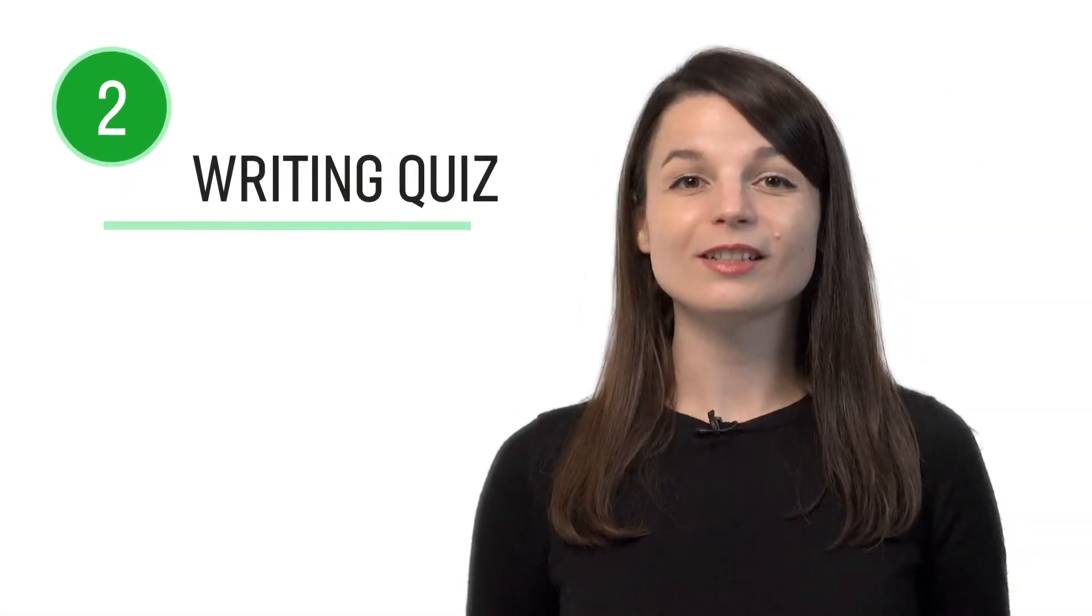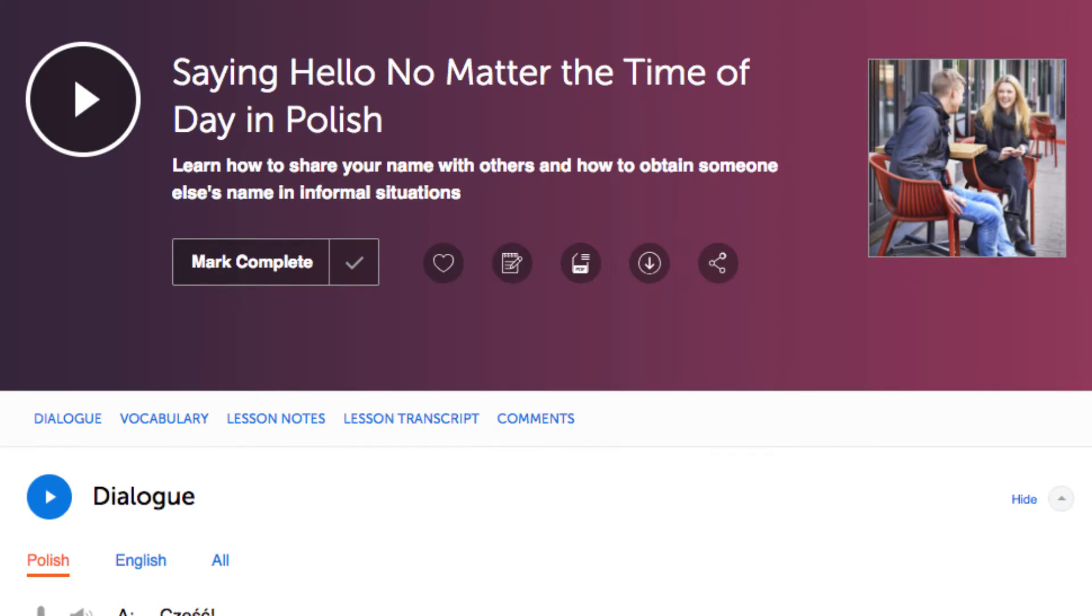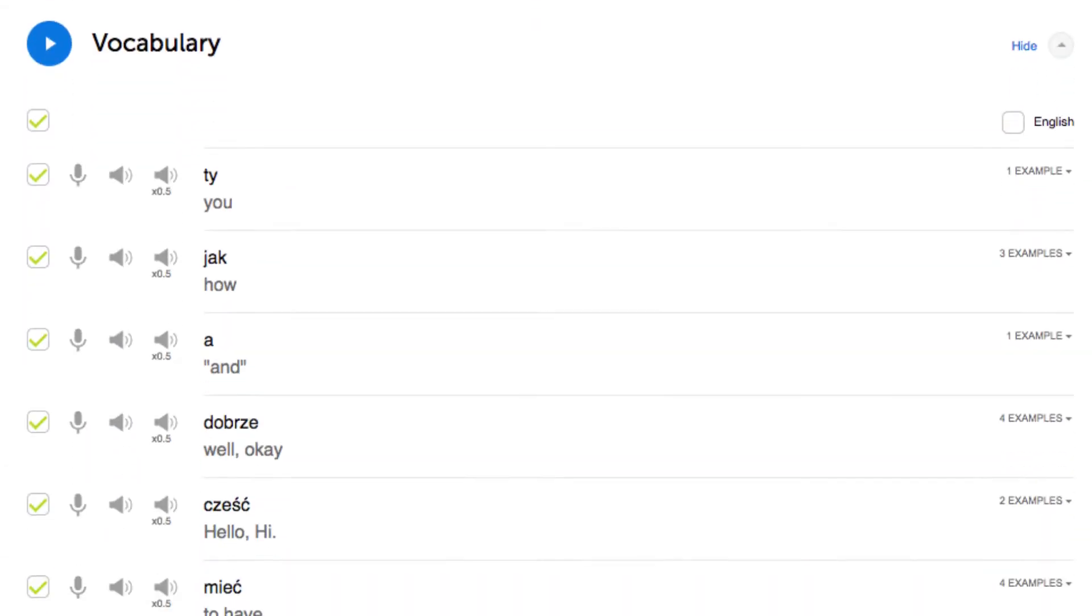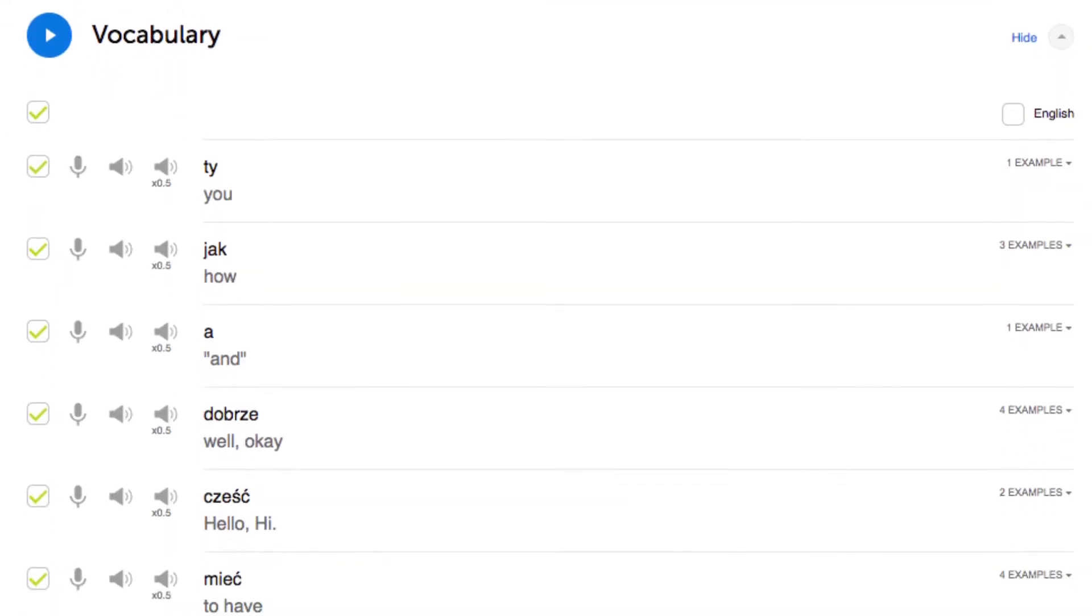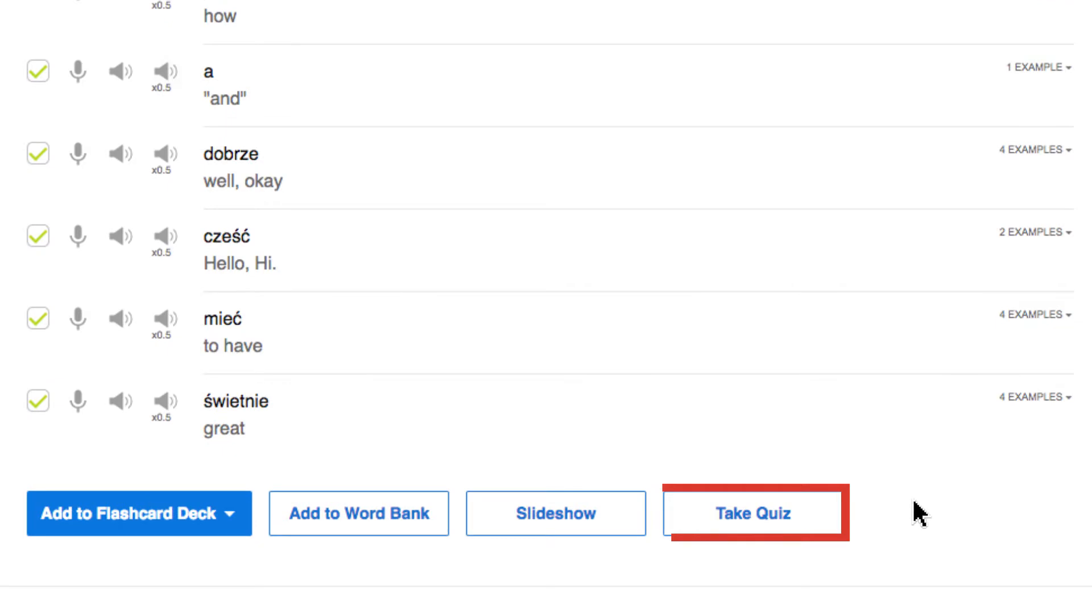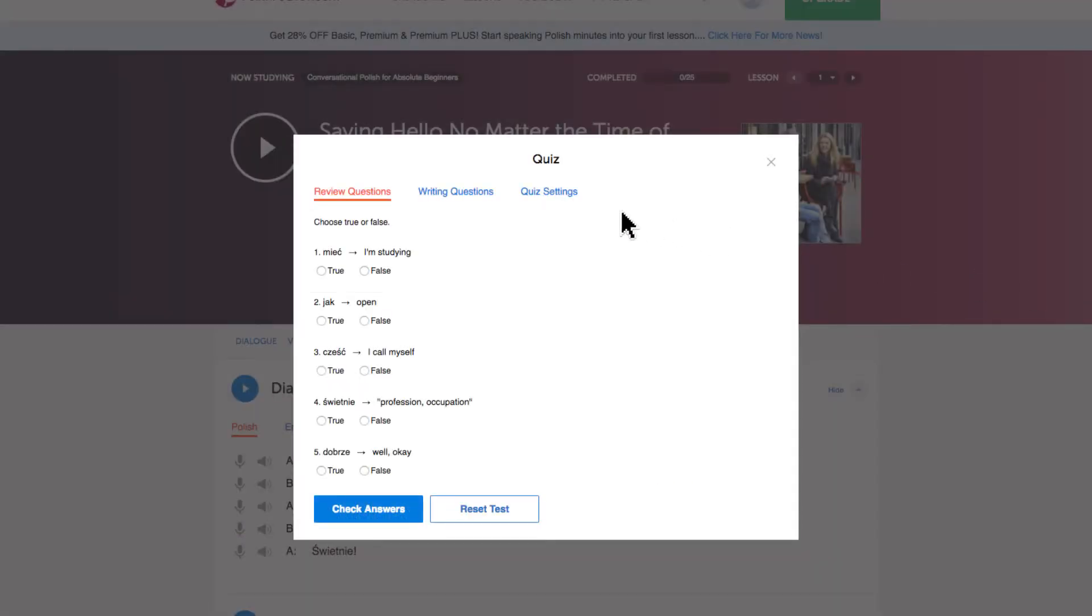Number 2. Take the writing quizzes. With every lesson, you get review quizzes to help you master what you've learned. Just scroll down to the vocabulary section or click on vocabulary. Click on take quiz and then click on writing questions.